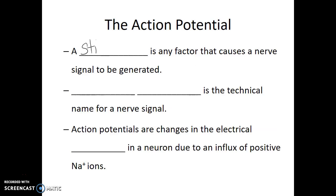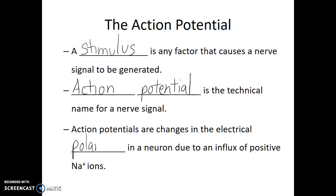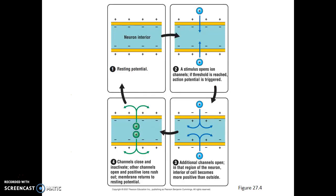A stimulus is any factor that causes a nerve signal to be generated. An action potential is the name of that electrical impulse — the nerve signal. Action potentials are changes in the electrical polarity in a neuron due to an influx of positively charged sodium ions. With that sodium-potassium pump, sodium ions are constantly being pumped out against their concentration gradient, so there's a large concentration of sodium ions directly outside the nerve cells. In its normal resting state, we see a negatively charged interior and a positively charged exterior.